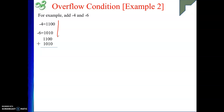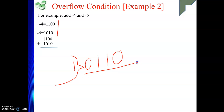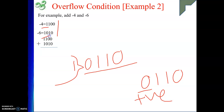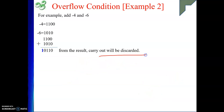Adding 1100 and 1010: 0 and 0 give 0; 0 and 1 give 1; 1 and 0 give 1; 1 and 1 give 0 with a carry out of the MSB. In 2's complement addition, if there is a carry out of the MSB, it is discarded. The carry flag will be 1, but the result is 0110.